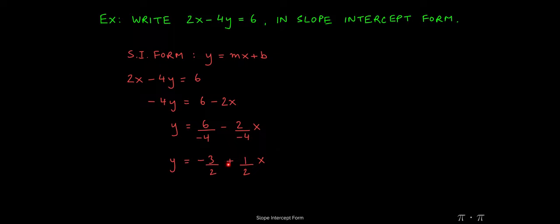Now you might observe that this is not exactly in the form y equals mx plus b. A simple rearrangement gets us there. So if we rewrite the 1 half x at the beginning of the problem, and we move the negative 3 halves a little bit to the right, we're left with y equals 1 half x minus 3 halves.